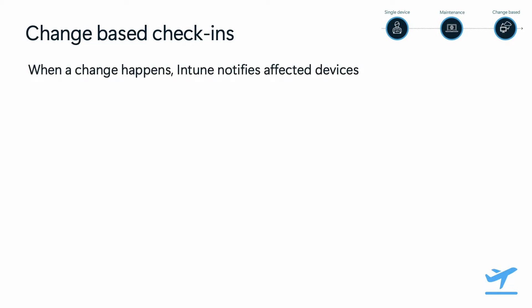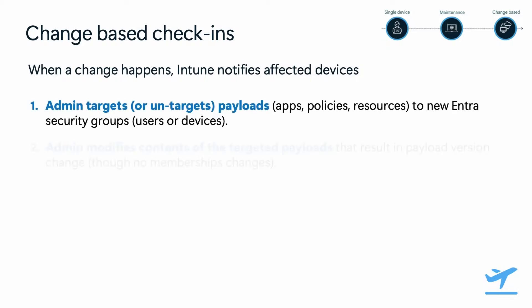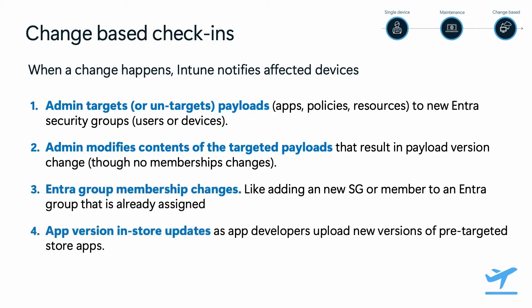In short, when a change happens, devices impacted by that change will be notified by Intune to check in. In other words, to result in faster device changes, Intune pushes devices to check in to effect change. There are four types of changes that Intune listens to and notifies devices about.